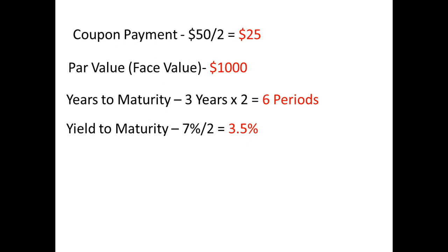We need to find the number of payment periods, the amount of the payments, and the yields to maturity for each period. If there are 3 years left to maturity and the payments are made semi-annually, then there are 6 payment periods remaining.